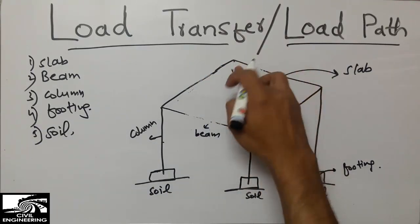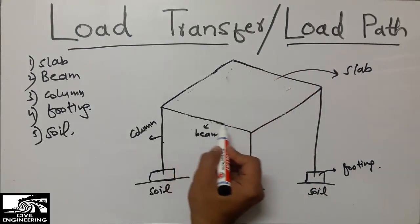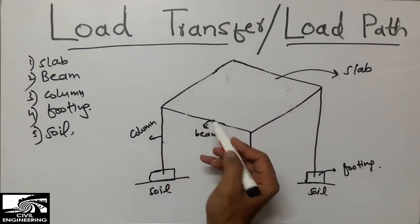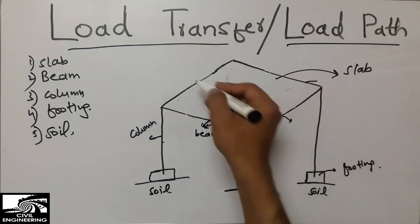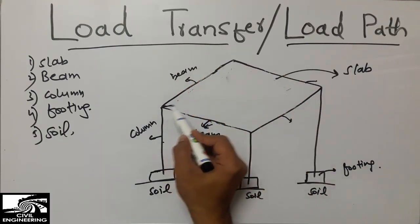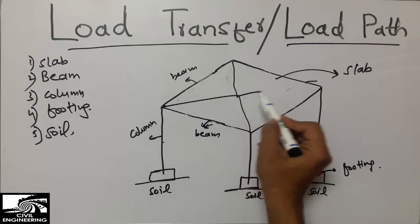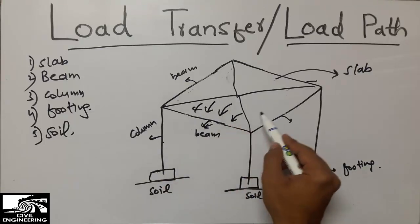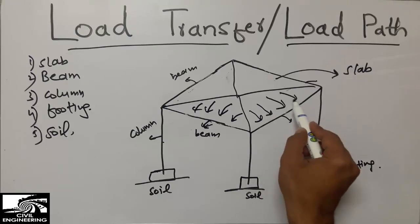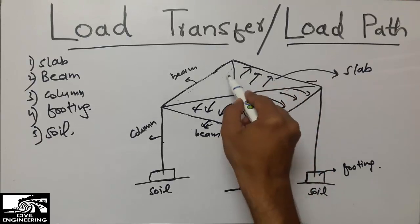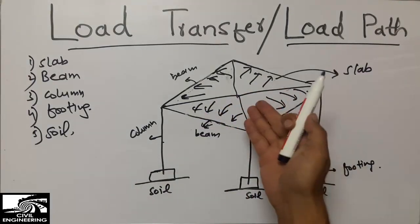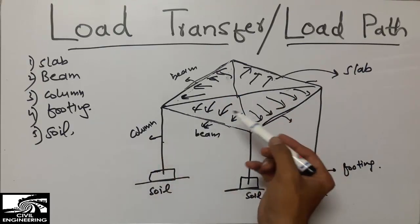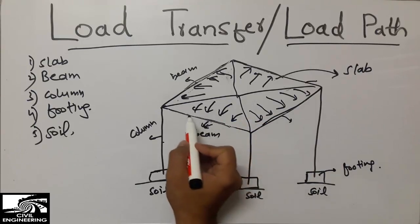So this is the slab, and the load coming onto this slab will be divided into the beams surrounding it — this beam, this beam, this beam, and this beam. The load is transferred in a triangular way to the beams. Some load is transferred in a triangular way to one beam, some to another beam, some to another, and some to the fourth beam. So the slab divides its load to its four surrounding beams.